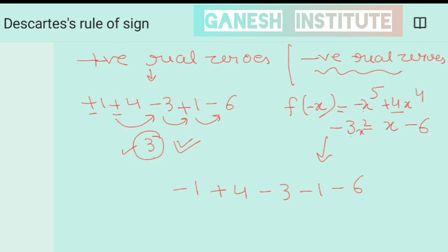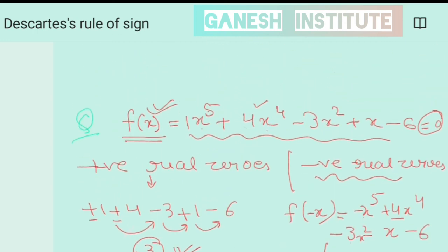Now again check how many are changing their signs. How many of coefficients? So this is one change, then another change, then these are same. So there are two changes, that means there are two negative real zeros for this polynomial.